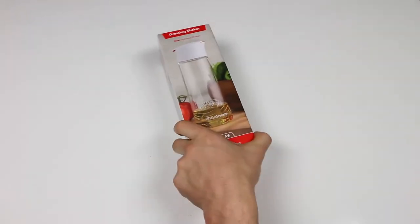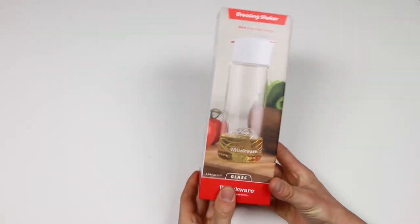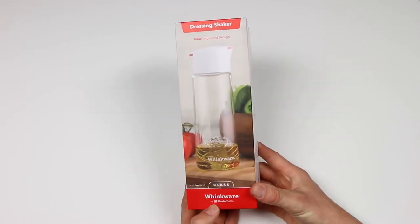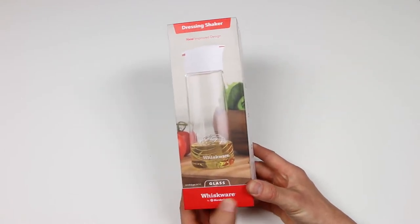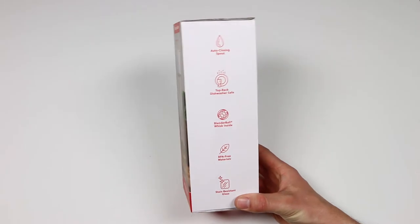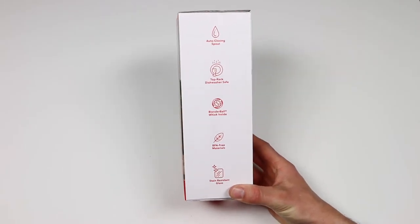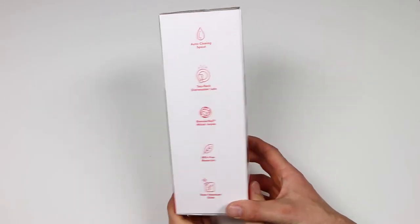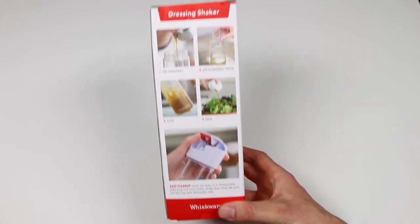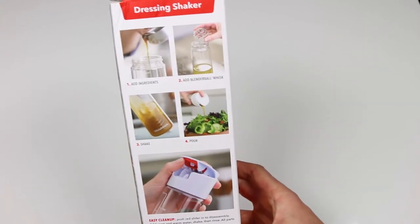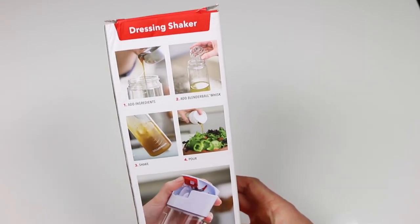Hey, it's Gerson and today I'm unboxing the Whiskware glass salad dressing shaker with blender ball wire whisk. The shaker comes in this nice little box with a picture of the product on the front and some simple steps on the back describing how the shaker works. Not that it's a complicated tool, but hey, some extra instructions never hurt.